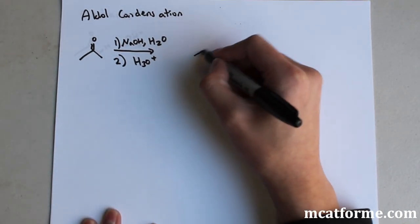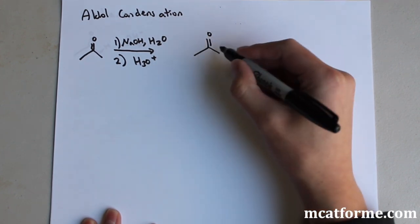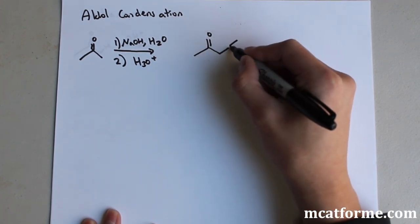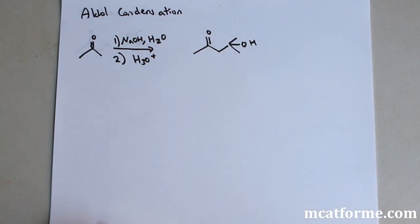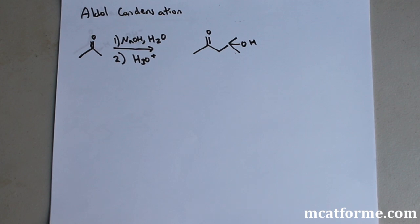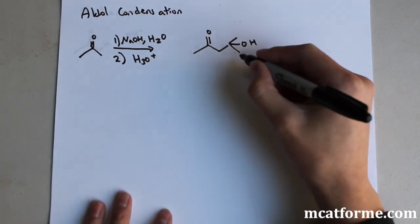So what happens here, we'll see the mechanism later, but pretty much in short what will happen is we're going to create something like that. And we're just combining two ketone molecules, two of the exact same ketone molecules together, and this is known as acetone. They react together and they form this molecule right here.